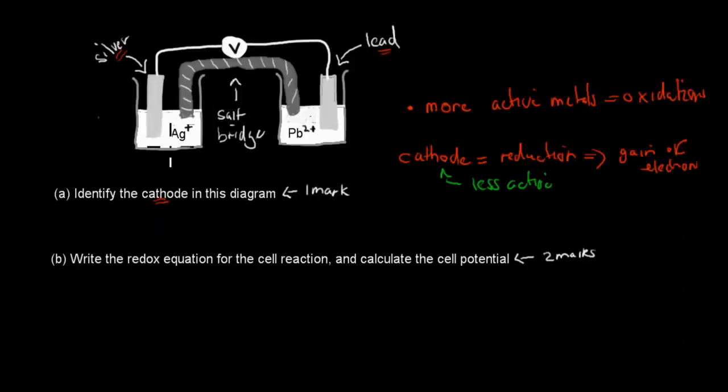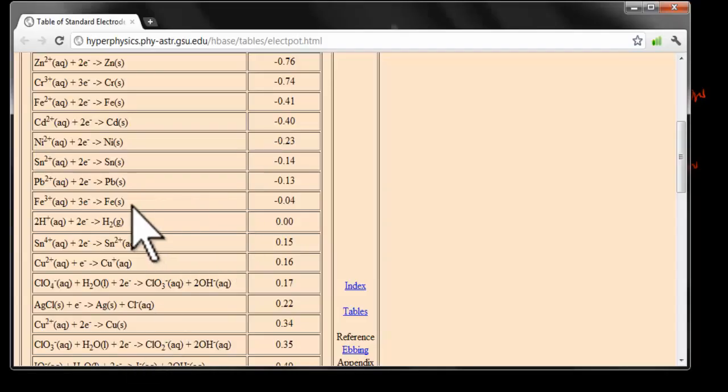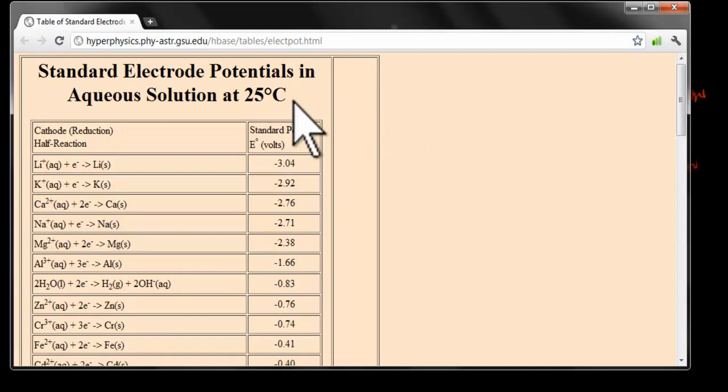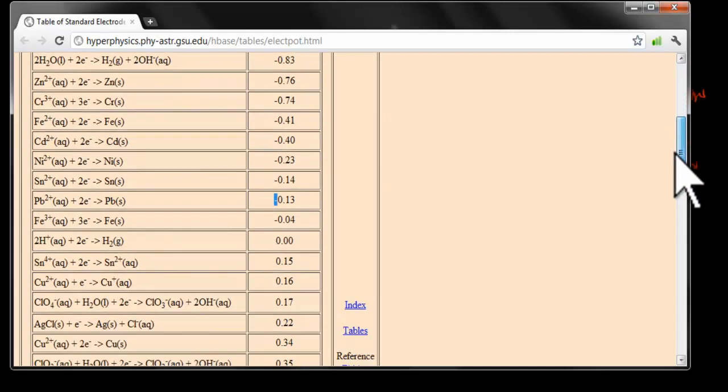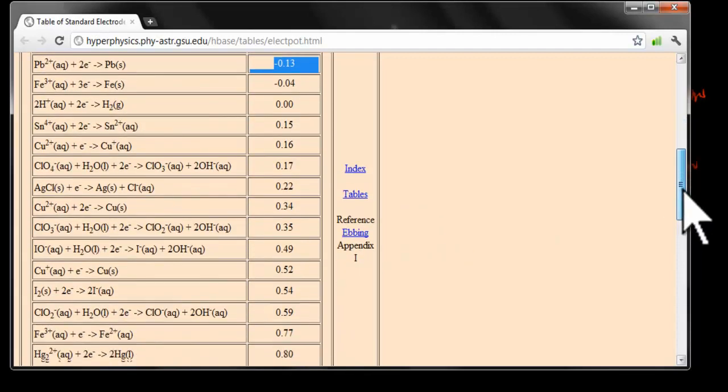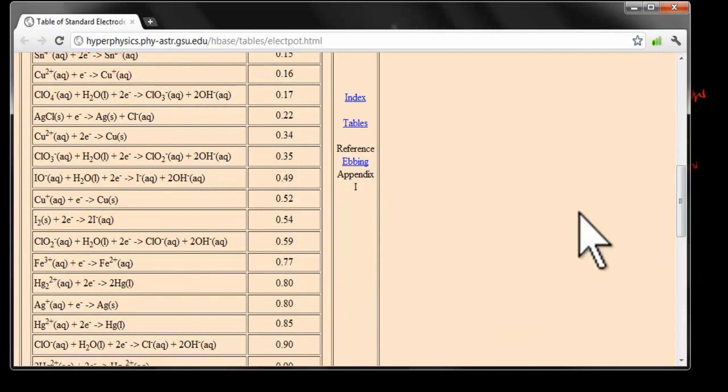So, we have Ag, so silver and lead, and we compare them. So, we've got Pb right here. And this gives us our standard reduction potential. So, this is how likely they are to gain electrons. This one is negative, so it's not that likely to gain electrons, especially compared to silver, which is somewhere around here. So, silver is here. It's positive, which means silver is much more likely to gain electrons than lead.